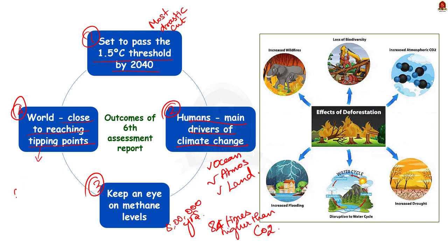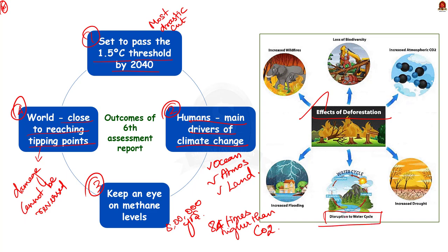Finally, the report said that the world is close to reaching the tipping point on climate change — the point where the damage cannot be reversed. The report quoted two examples: first, if temperatures continue to rise, forests could start to die, and such natural deforestation will have disastrous consequences. Second, as global warming occurs, ice caps melt at a rapid pace, meaning sea levels rise and coastal towns and cities are in danger of being swallowed by the oceans. These two conditions are irreversible.